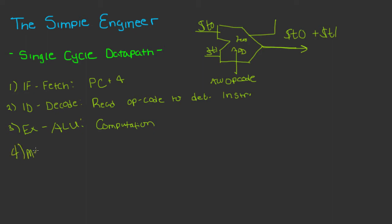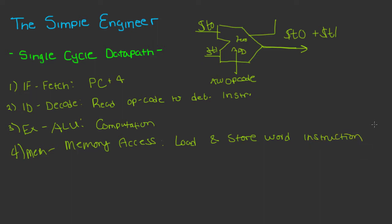Next is the MEM stage — the actual memory access. This stage only gets utilized with load word and store word instructions. If you're loading a word from memory or storing a word into memory, that's when you use the MEM stage. Otherwise, when implementing the single cycle datapath, you skip over it very quickly because you're not actually loading or storing data in RAM.